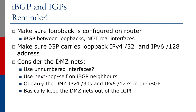Considerations for the DMZ nets are: are you going to use unnumbered interfaces? Always remember to use NextHopSelf on IBGP neighbors. Also carry the DMZ IPv4 /30s and the IPv6 /127s in the IBGP. Remember to keep the DMZ nets out of IGP.